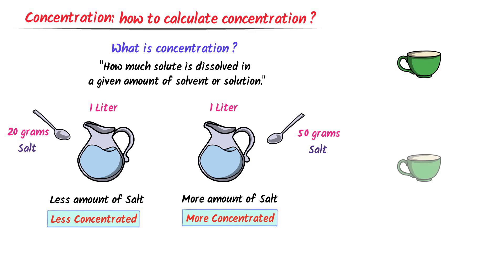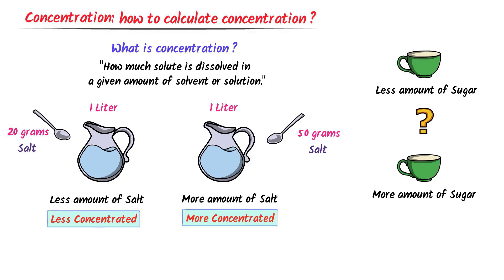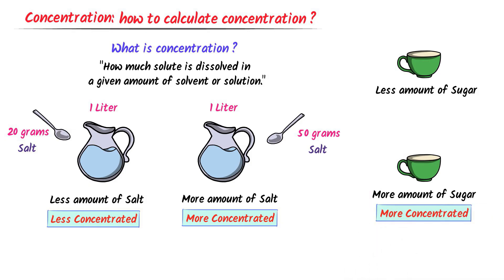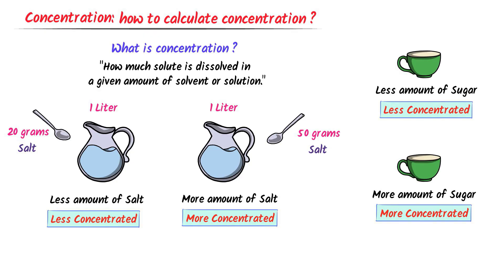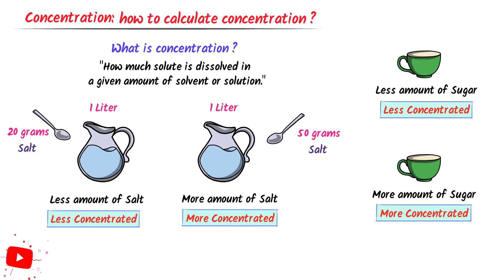Similarly, consider these two cups of tea. Let this cup contain less amount of sugar and this cup contain more amount of sugar. Can you guess which cup is more concentrated? This cup contains more amount of sugar, so it is more concentrated, while this cup contains less amount of sugar, so it is less concentrated. Therefore, remember that concentration explains how much solute is dissolved in a given amount of solvent or solution.